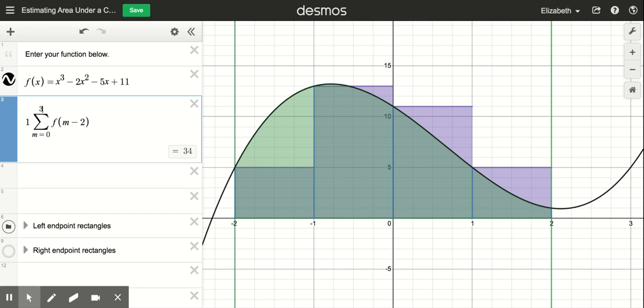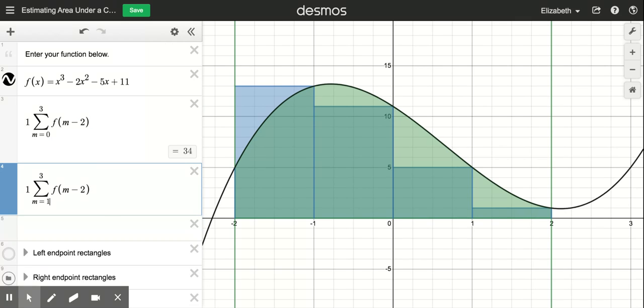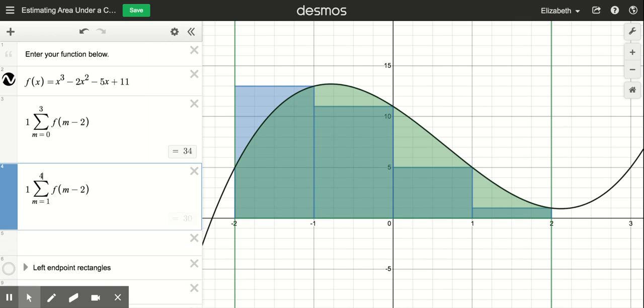If I want to do instead the right endpoint rectangles, I can honestly just copy and paste this summation and then I just change my indices here to go now from one to four to give me the rectangles on the other side. And I can see that the area of those rectangles is 30.